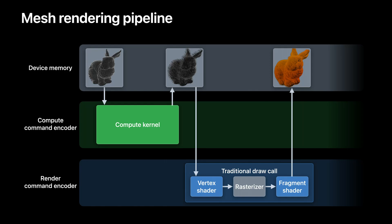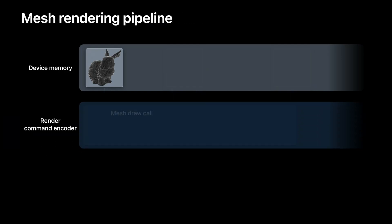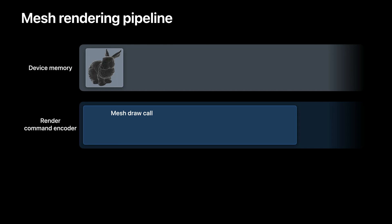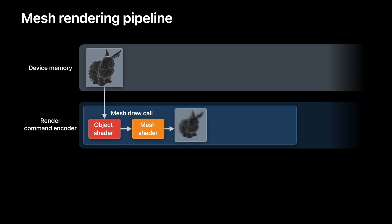Metal Mesh Shaders address all of those issues. Mesh Shaders is a new geometry pipeline that replaces the Vertex Shader stage with two new programmable stages: the Object Shader stage and the Mesh Shader stage. The Object Shader would take geometry as an input, process it, and output some data — which we call payload — to the Mesh Shader. It is up to you to decide what this data is. The Mesh Shader would use this data to generate procedural geometry. This procedural geometry would only exist inside the draw call, so it would not require you to allocate any device memory. It would be pipelined straight to the rasterizer, then to the Fragment Shader, to produce the final image.